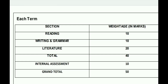So overall agar mein baat karoon — 5 plus 2 is 7, plus 3 is 10. So overall 10 chapters jo hain aapki class se, subject se, course se deleted kiye gaye hain. Uske alawa jitna bhi syllabus aapka bacha hai — especially writing skills dekh lijiye — usmein jo aapke overall divide kiya gaya hai.